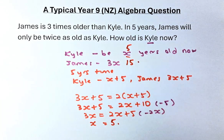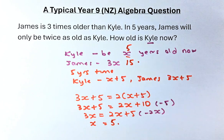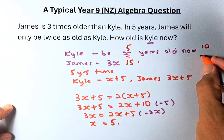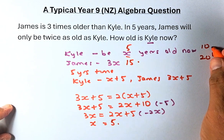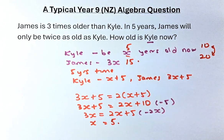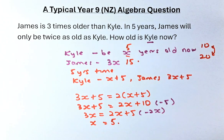So the answer is: Carl is now 5 years old and James is 15 years old. In 5 years time, Carl will be 10 and James will be 20 — and 20 is double 10, so we are on the right track. This is how you answer a question in algebra: you need to form an equation and solve it using algebraic methods. Hope you enjoyed this video!